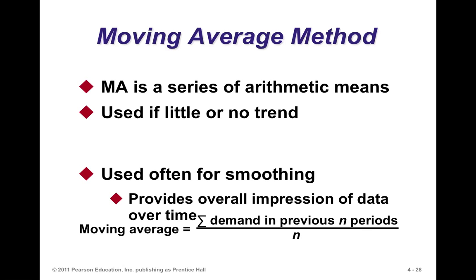The moving average takes the arithmetic mean of parts of the data. With a three-period moving average, we predict April's demand by averaging January, February, and March demand. With a two-period moving average using daily data, we average Monday and Tuesday demand to predict Wednesday's. The approach is fairly straightforward.